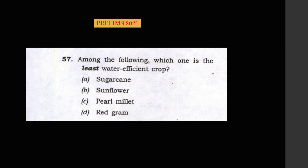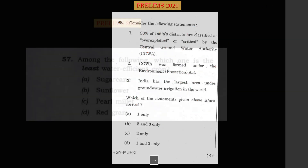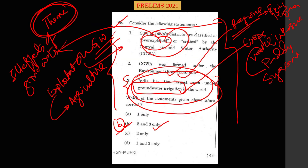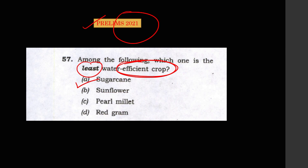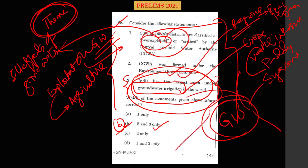And the very next year, 2021, the question was: among the following crops, which one is the least water-efficient crop? One year back the question was on groundwater irrigation, and the next year the question is on water-intensive crops. The answer was sugarcane. As I mentioned, paddy and sugarcane are the most water-intensive crops in India. You see — same themes are repeating. When you get the theme, you have to comprehensively prepare that topic from every dimension so you are ready to solve any question from it.